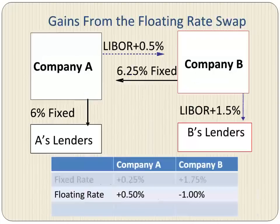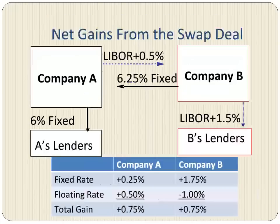Since Company B receives the floating rate payments of LIBOR plus 0.5% but must make payments at LIBOR plus 1.5%, it loses 1% on the floating rate. When we add up all gains and losses, each company winds up with a gain of 75 basis points. This was the objective of the swap deal — both companies have lowered their cost of borrowing by 75 basis points.